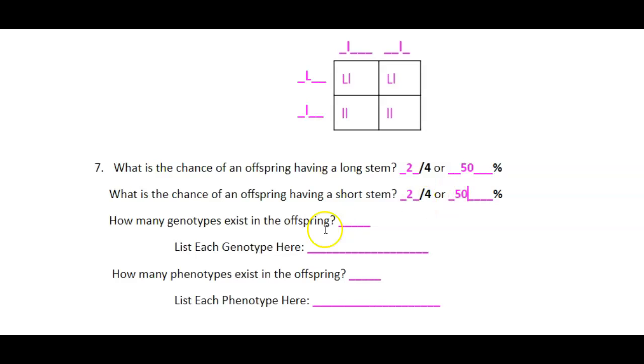How many genotypes exist? Genotype means the letters. How many different letter combinations? So notice I've got one, big L little L, two. I've got two different letter combinations.